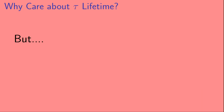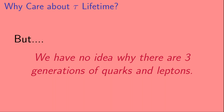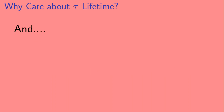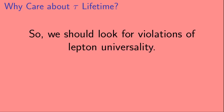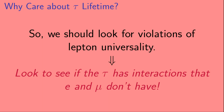Importantly, we have no idea why there are three generations of quarks and leptons. And while the standard model has identical interactions with gauge bosons for the three generations, the standard model may not be the correct theory of nature. Therefore, we should look for violations of lepton universality, and one way to do this is to look and see if the tau has interactions that the electron and muon don't have.